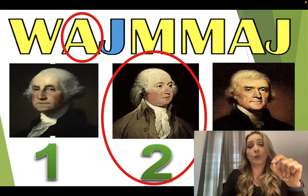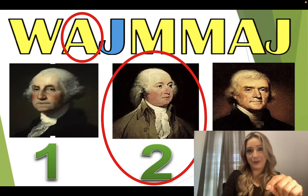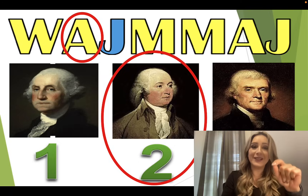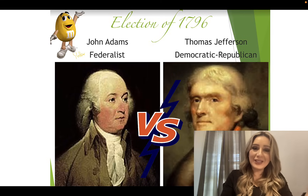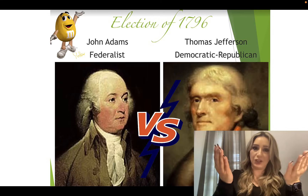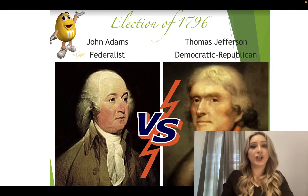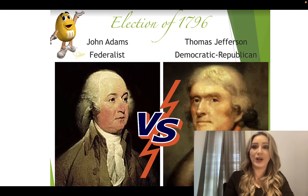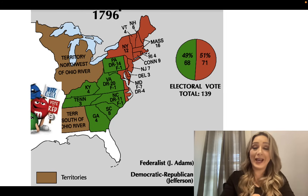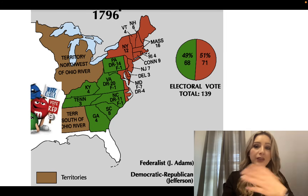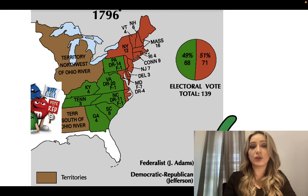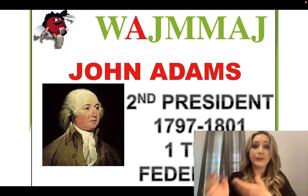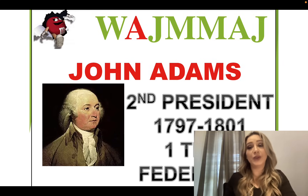We're going to have to start with John Adams, who is our second president of the United States. In 1796, there was an election for second president. John Adams, who's a Federalist, ran against Thomas Jefferson, a Democratic Republican, and John Adams won. Here you see the electoral votes and how John Adams won most of them. He became our second president of the United States.